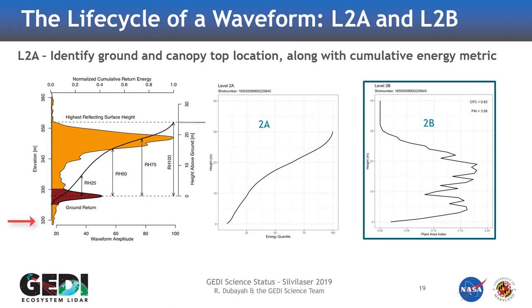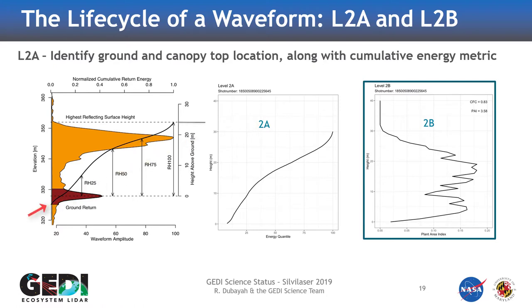So again, here on this axis is just the absolute elevation. This is still 1B, so you see these are large elevation numbers in meters. When you go to the 2A dataset, then we identify where we think the ground is, and we identify where we think the canopy top is.